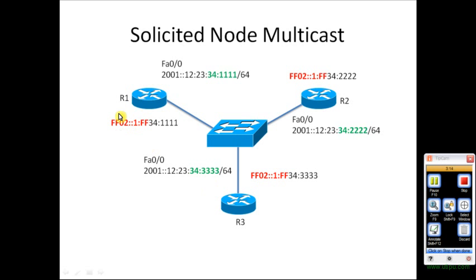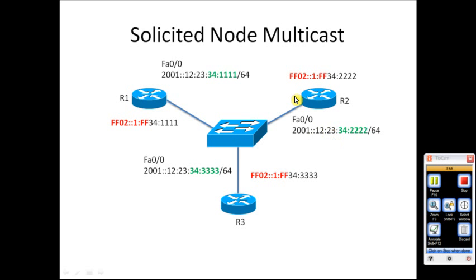The purpose of this multicast prefix is reserved for Neighbor Solicitation and Neighbor Advertisement. For example, assume R1 wants to communicate with R2. R1 knows its own IPv6 and MAC addresses for its FastEthernet 0/0 interface, and it knows R2's IPv6 address, but what is missing is the MAC address of R2's FastEthernet 0/0 interface.